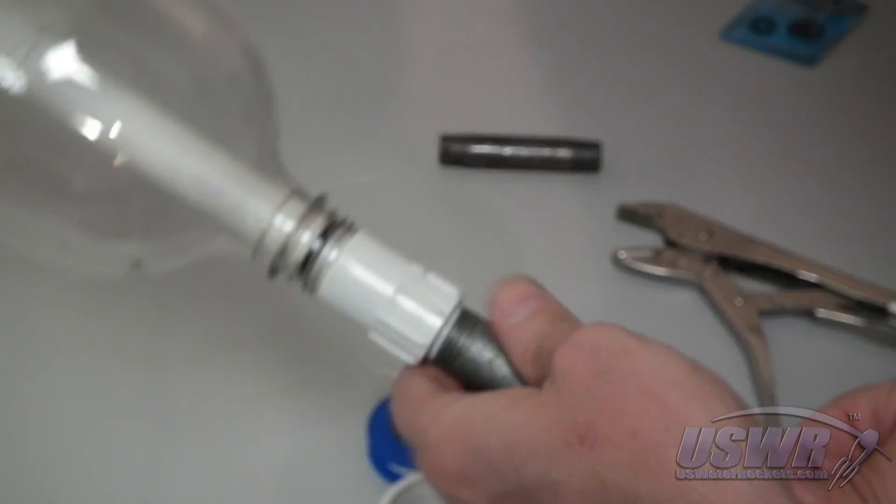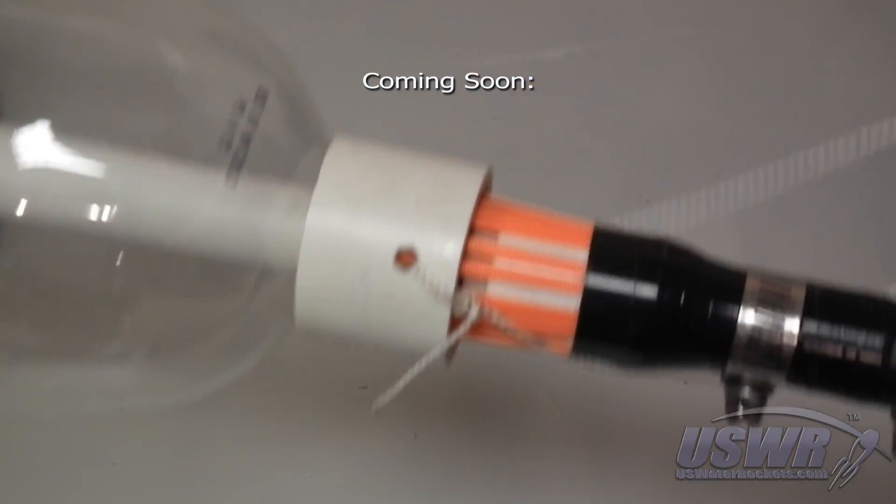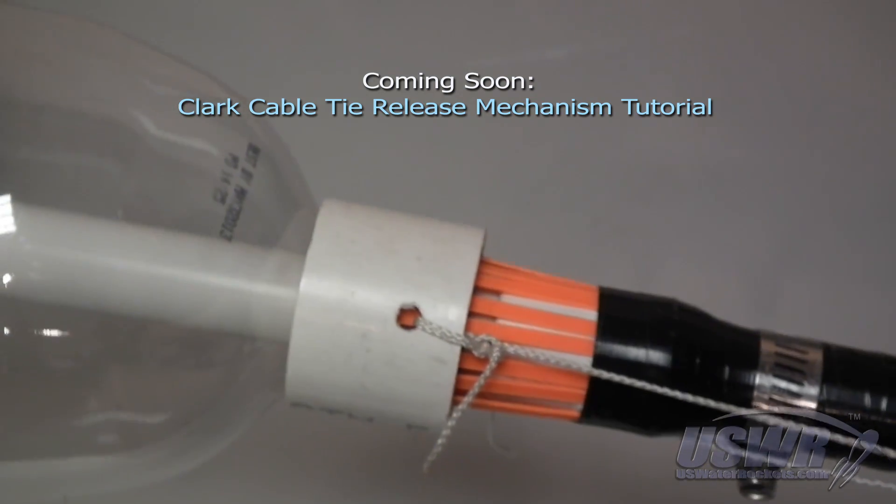The only thing you need to launch rockets is some sort of release mechanism. Stay tuned because our next tutorial will show you how to build a Clark cable tie release.